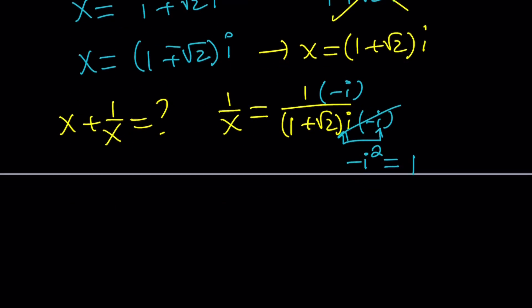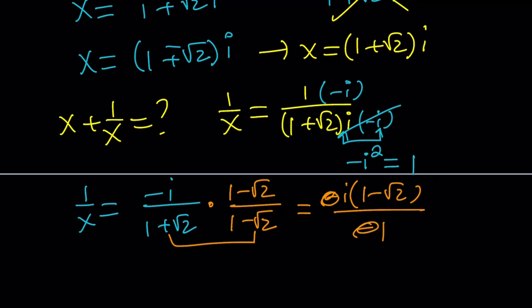So, from here, 1 over x becomes negative i over 1 plus root 2. We don't care about that, but we can rationalize the denominator, multiplying the top and the bottom by the radical conjugate. And that gives us negative i times 1 minus root 2, divided by 1 minus 2 from difference of 2 squared, which is a negative 1. The negatives cancel out, and we end up with this. So, now I have the x, and I have the 1 over x. Let's go ahead and add them.